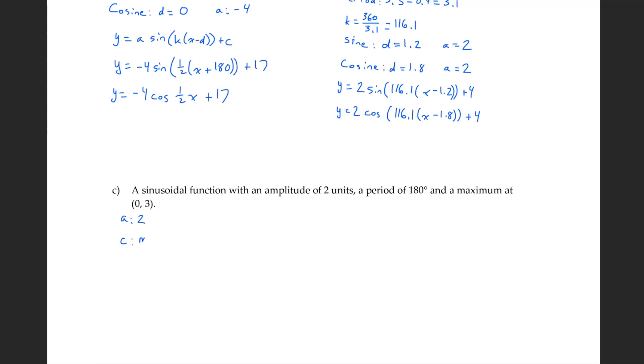Or you can just think of max minus the amplitude, so 3 minus 2 which equals 1. Remember, the amplitude is the difference from the equation of the axis, so that's why you can just subtract it out from the maximum.